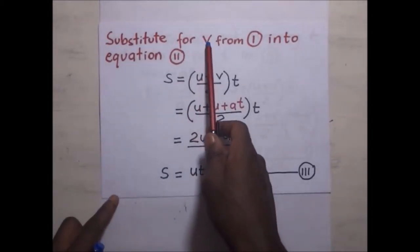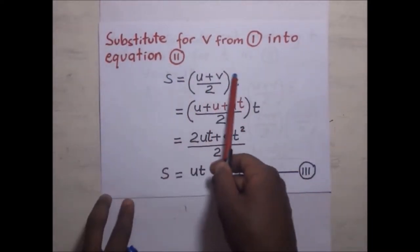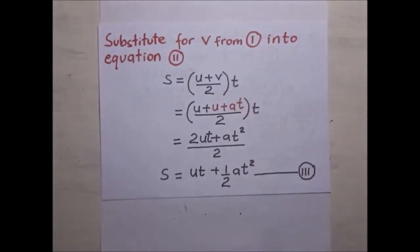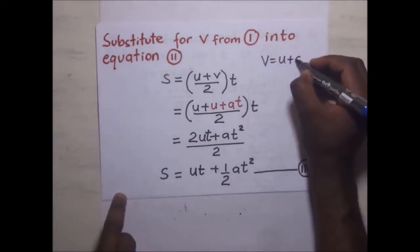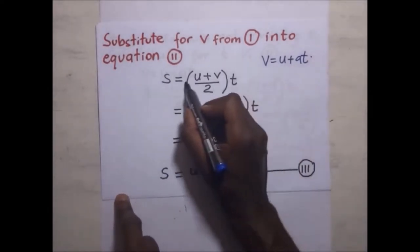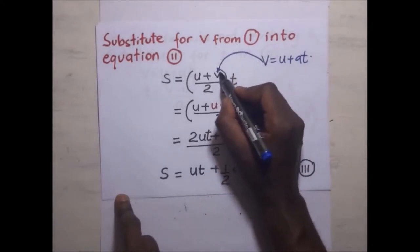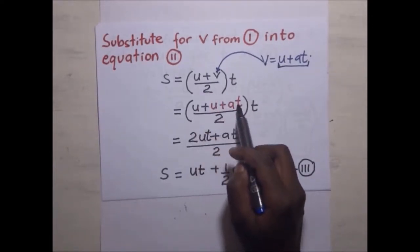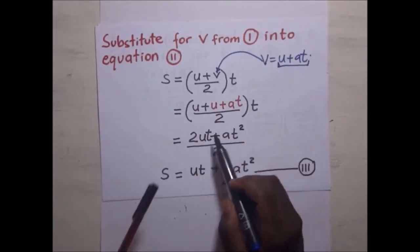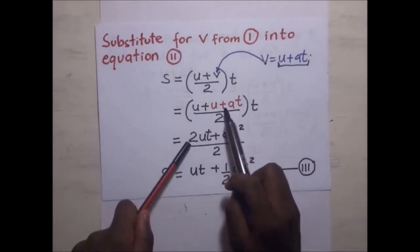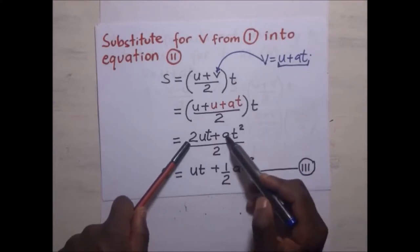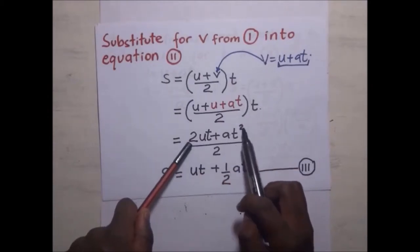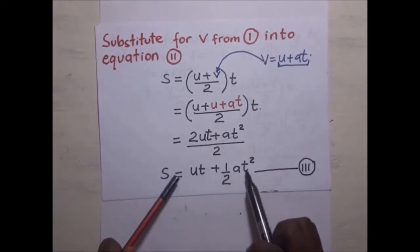Deriving the third equation by substitution: starting with s = (u + v)/2 × t, substitute v = u + at: s = (u + u + at)/2 × t = (2u + at)/2 × t = (2ut + at²)/2 = ut + ½at². This confirms the third equation of motion: s = ut + ½at².